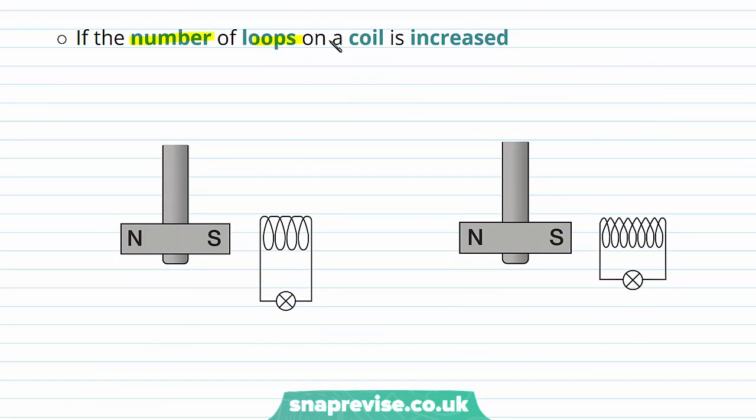The EMF will also increase if the number of loops on the coil is increased. In this case, we have n equals 4 turns on the coil, whereas in this case, we have n equals 7 turns on the coil, which means we have an increased EMF for the coil with a larger number of turns.